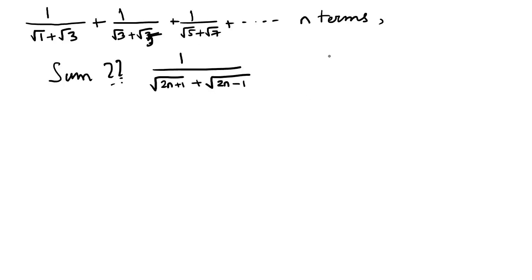Now we will use a very interesting property. That is, if we have a number in this form, 1 by a plus b, then it can be written as a minus b divided by a squared minus b squared.